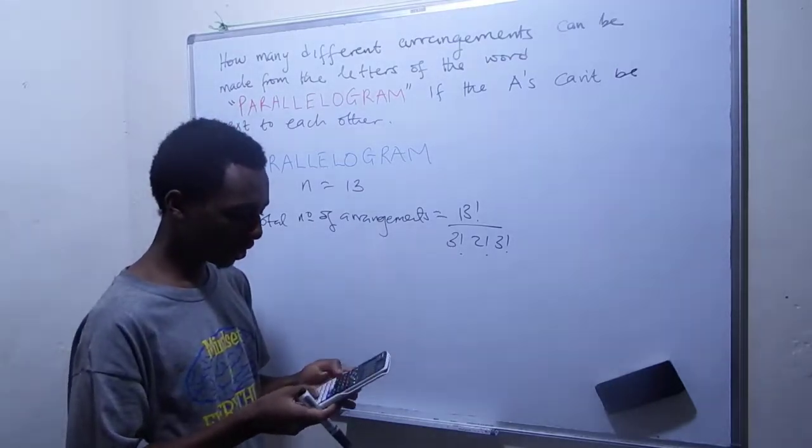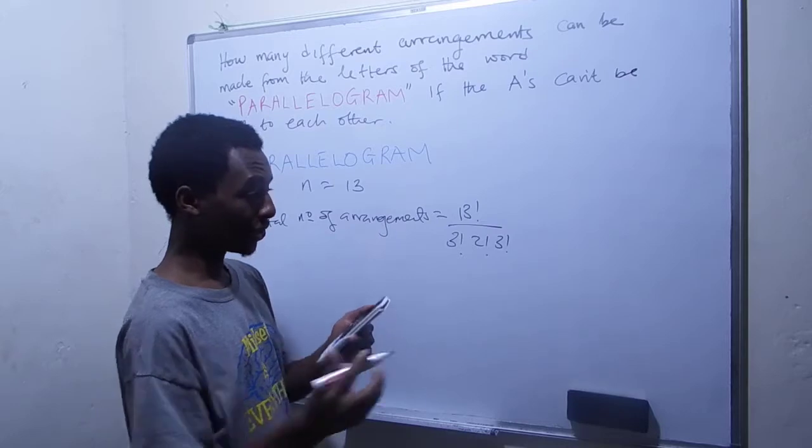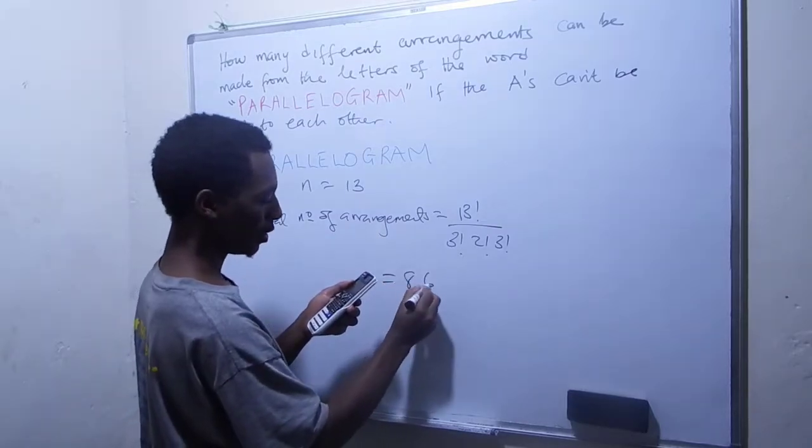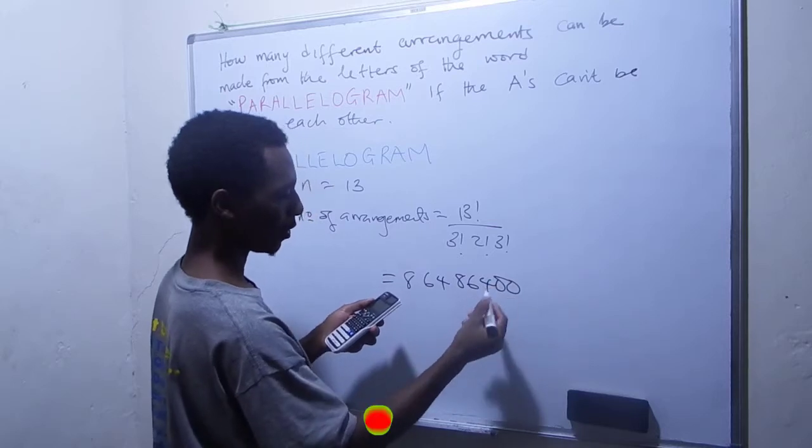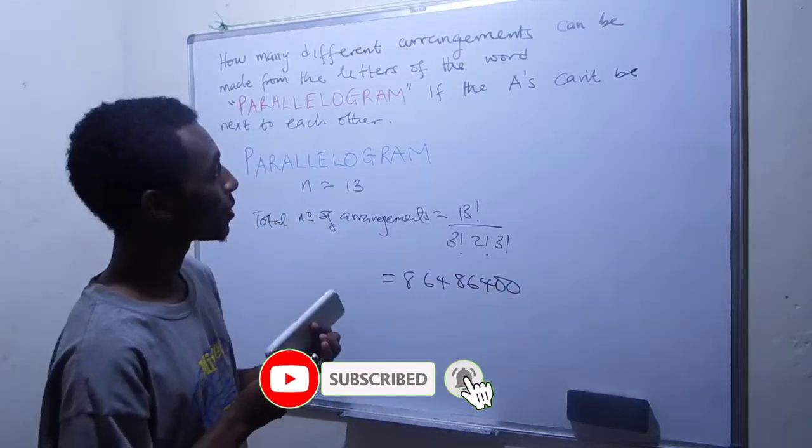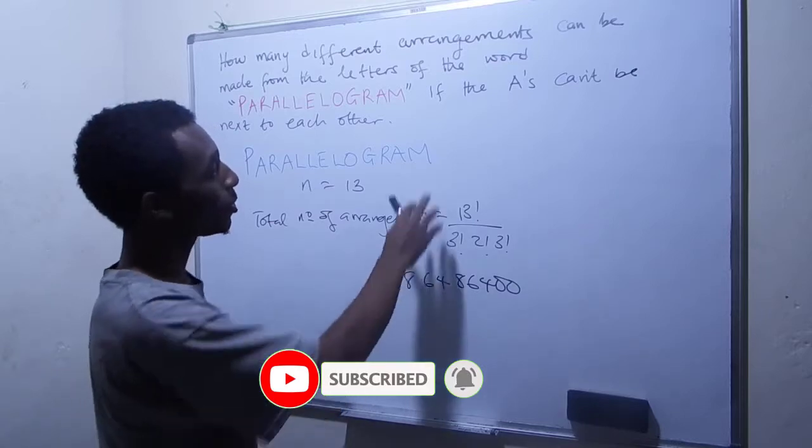And let me just put that quickly on the calculator. All right. So that's 8, 6, 4, 8, 6, 4, 0, 0. Okay. So that's the total number of arrangements. So let's look at the second part of the question.